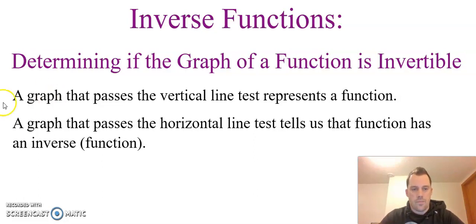Recall that if a graph passes the vertical line test, then that represents a function. But if we also do the horizontal line test, that tells us that the function has an inverse if it does pass that test. If it does not pass the horizontal line test, then that function does not have an inverse.